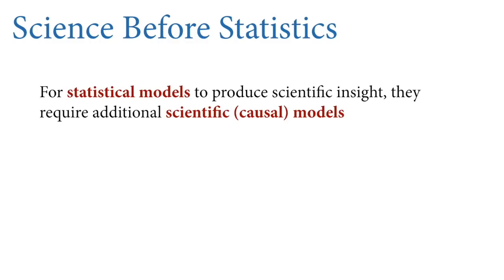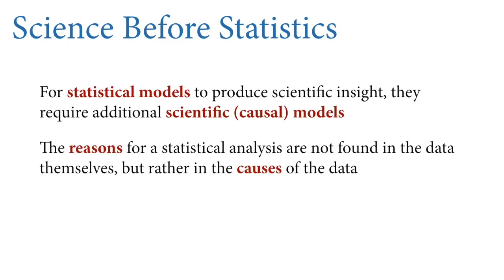What do I mean? For statistical models to produce scientific insights, you really need something outside the statistical model. What we need are scientific models, sometimes called causal models, models that contain in them entities that influence other entities and not the reverse. The reasons we do a statistical analysis a certain way are not in the data themselves. It's not enough to simply have a big data table and then look at it. Data tables only have associations.